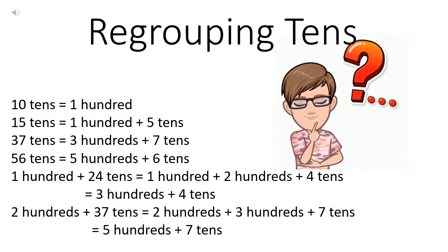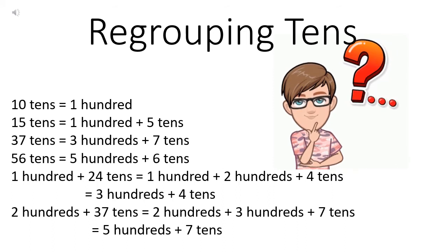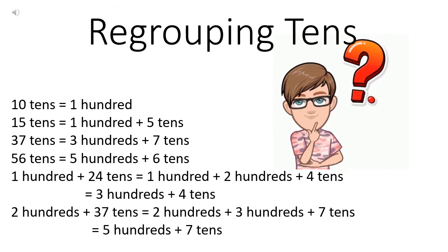Now let's learn regrouping tens. Ten tens is equal to one hundred. If we have ten bundles of tens, it will make one hundred. Suppose you have fifteen tens — ten tens make one hundred. So we will regroup fifteen tens into one hundred and five tens. Ten tens plus five tens is equal to one hundred plus five tens.